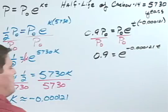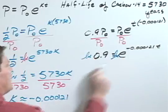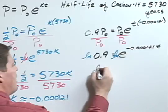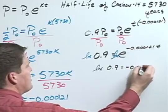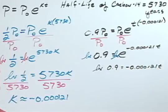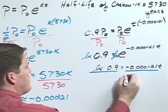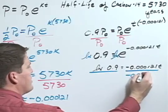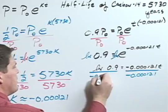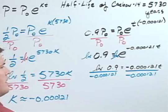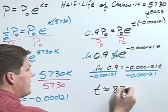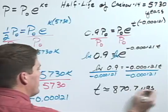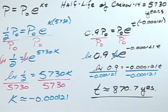Take the natural log of both sides, so that the natural log of 0.9 equals negative 0.000121 T. Finally, divide both sides by negative 0.000121 to find that T is approximately 870.7 years. So the approximate age of our chalice is 870.7 years old.